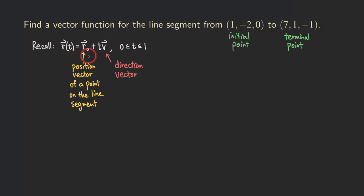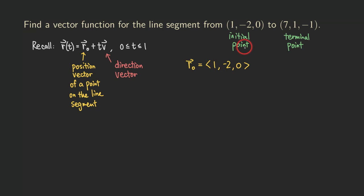Everything is ready, so let's come up with a solution. First, we write down R0, which is our initial point. Remember, it's a position vector, so we use the X, Y, Z values as components. The tail of the position vector is at the origin and its head points to this point. So we have 1, negative 2, and 0 — exactly those three values.